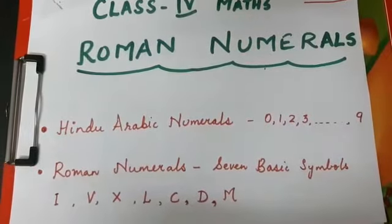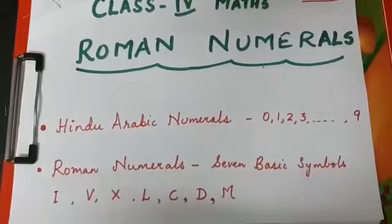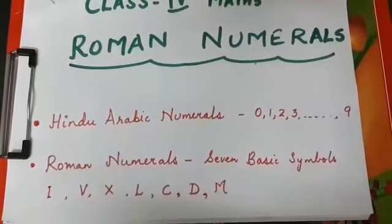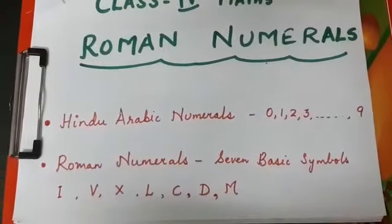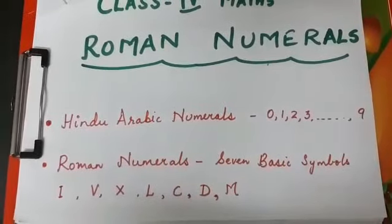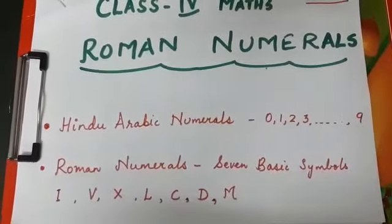That is 0, 1, 2, 3, 4, 5, 6, 7, 8 up to 9. So we make use of how many digits to write any numbers? We make use of 10 digits.